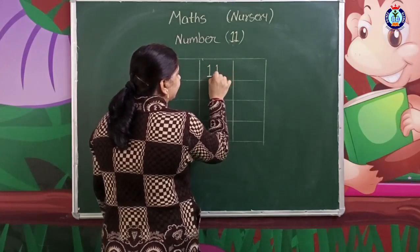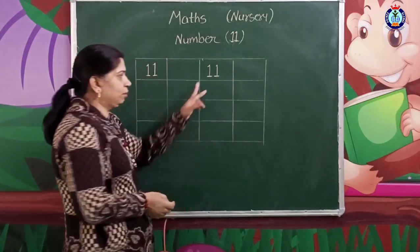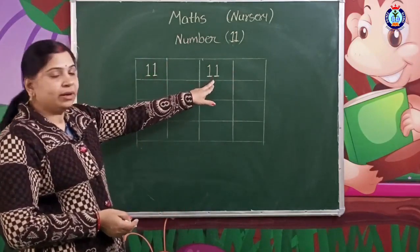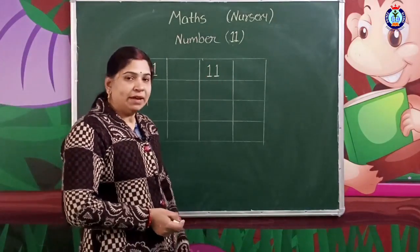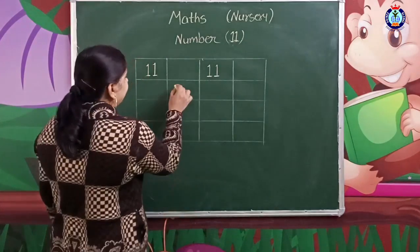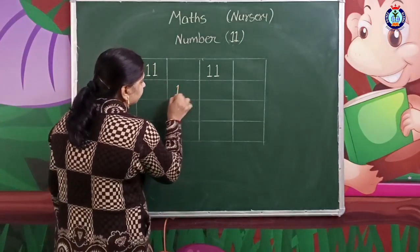Number 11 has two ones. So if you have two ones, you will have this one. If you have two ones, you have one-one together. Look at that.